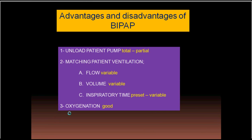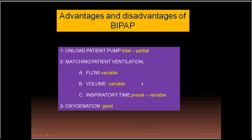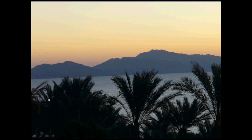A key advantage of BiPAP is its use as a weaning mode: you can place the patient on high and low CPAP levels, and as the patient's condition improves, gradually lower the high level until the patient is maintained only on the lower CPAP, then wean from there. In summary, BiPAP supports both mandatory and spontaneous breaths; flow and volume are variable for pressure support breaths, while inspiratory time is preset for mandatory and variable for pressure support breaths.